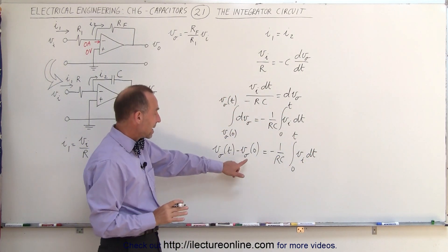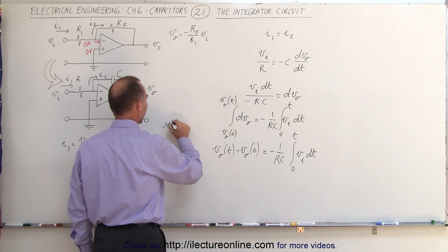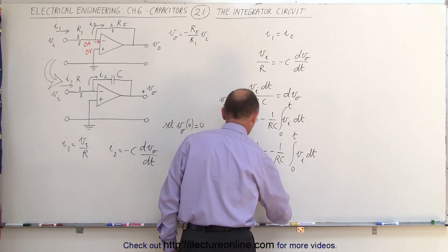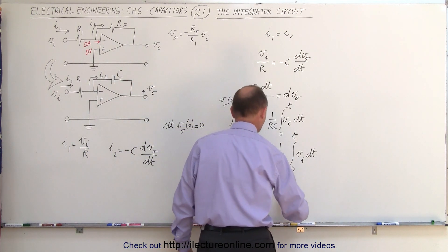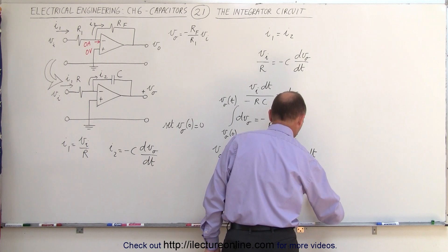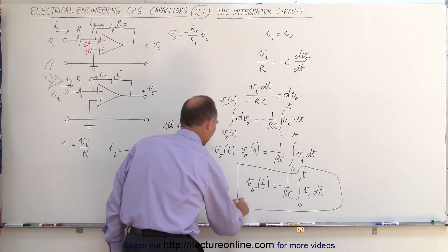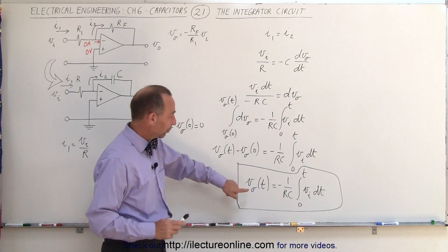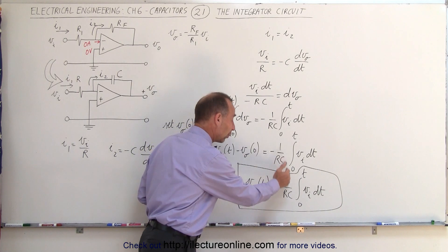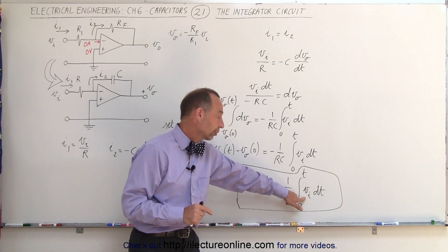Now let's assume that the output voltage at time equals 0 is equal to 0, so we set V_out(0) equal to zero — this term disappears. Essentially we can write that the output voltage as a function of time is going to be equal to minus 1 over RC times the integral from 0 to T of the input voltage times dt. This tells us that the output voltage is proportional to the integral of the input voltage.